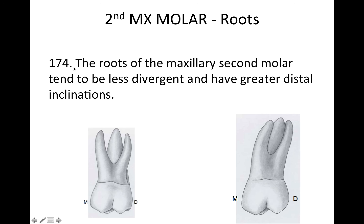On to the roots: the roots of the maxillary second molar tend to be less divergent and have a greater distal inclination. The first molar roots are very divergent, but on the second molar they're more squished together — as you move toward the posterior, you're running out of room. That third molar is scrunching against there, so the roots have to be closer together, unlike the first molar which sits against a premolar with plenty of room.